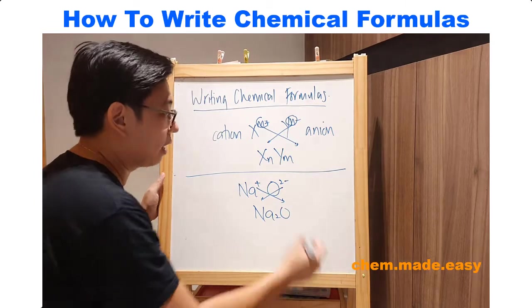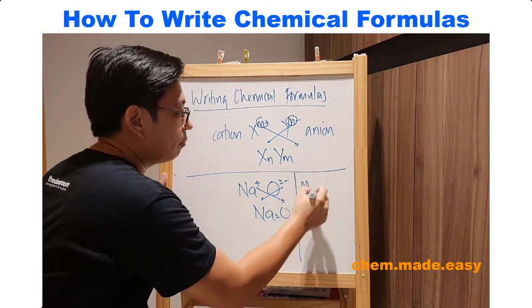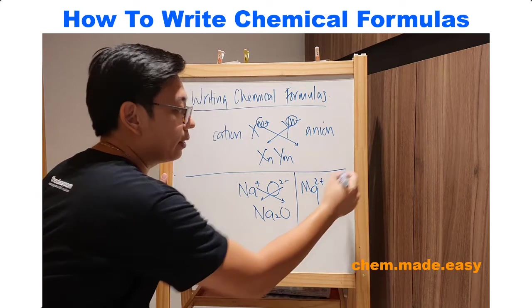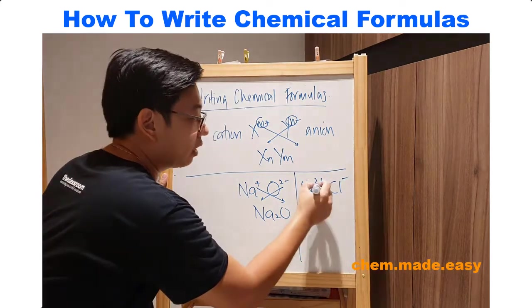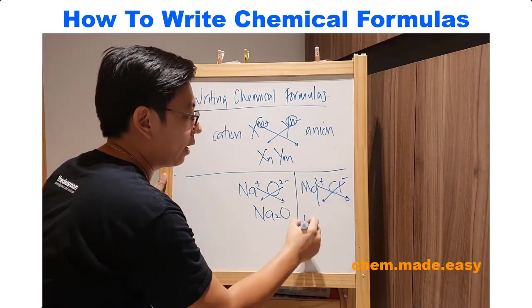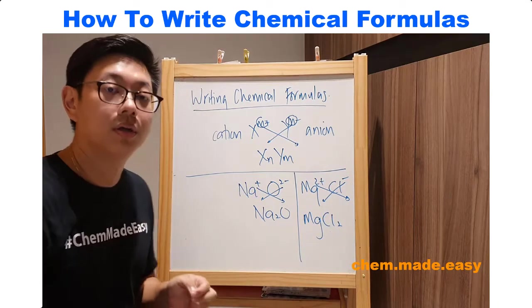So if I give you another example, like say magnesium, Mg2+, chloride, Cl-, similarly, if you take the numbers and cross it down, you're going to get MgCl2.